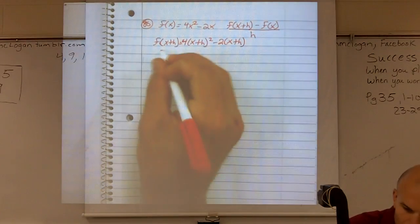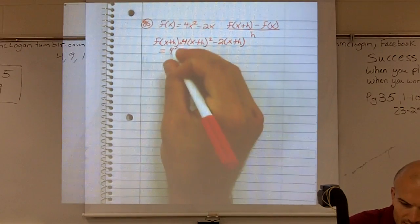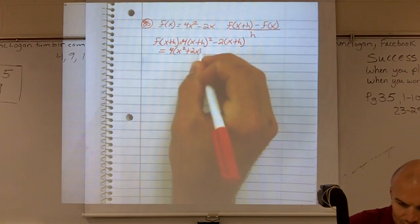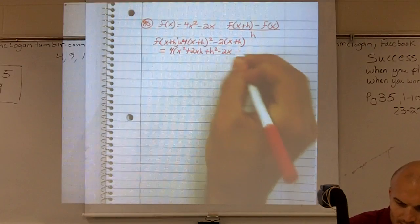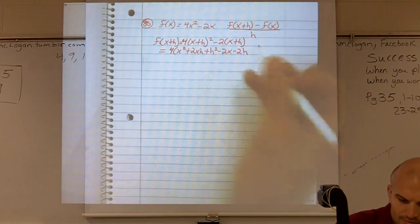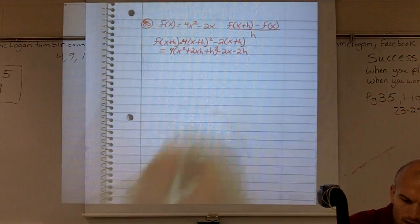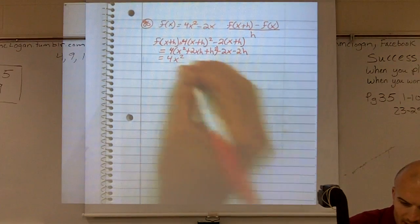So therefore, that equals 4 times (x plus h) is going to give me x squared plus 2xh plus h squared minus 2x minus 2h. And I'll probably put brackets around back over there. I'll multiply by 4 all the way through, so I can simplify my work.